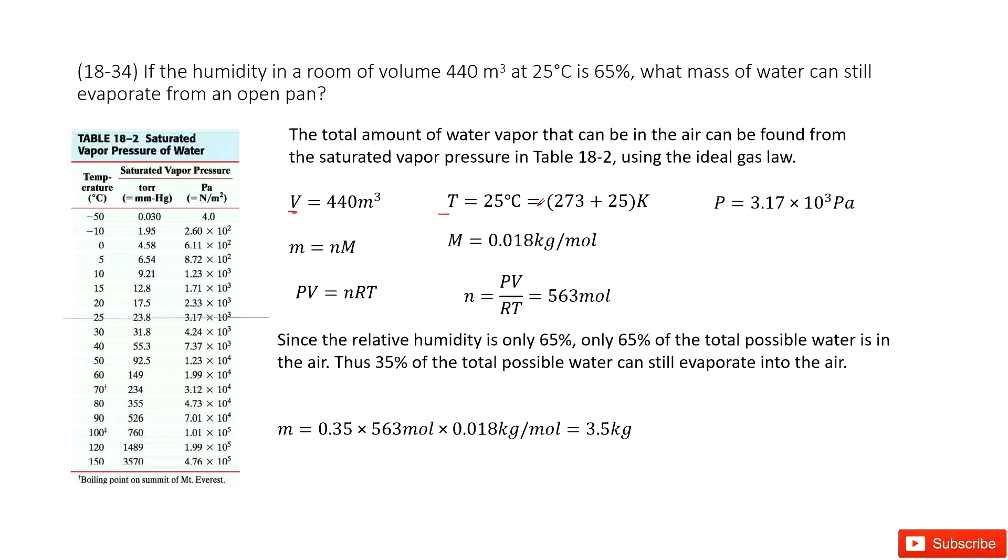So in this case when we look at the mass of water, it looks like we need to find the mole number. Do you agree? Find the mole number of this water and then multiply by the mass per mole of water. And this one is a given quantity. It is 0.018 kg per mole.